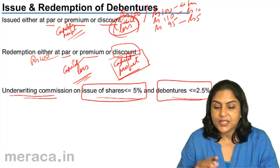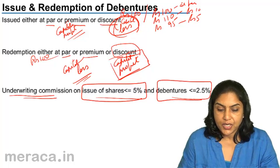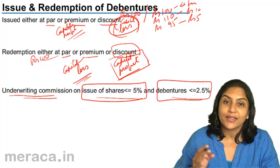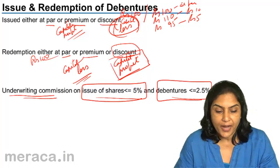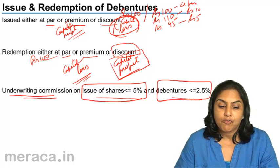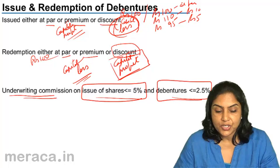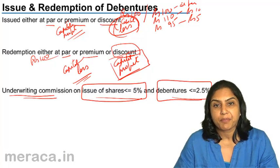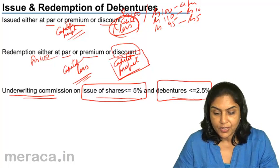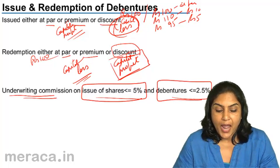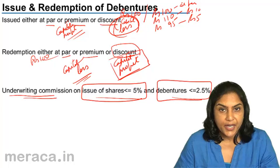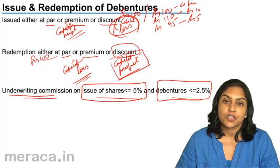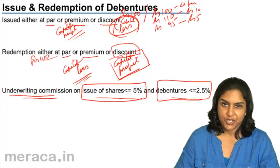With this information, let us look at the accounting entries for debentures when they are issued at par, premium, or discount, and also contain the terms of redemption.